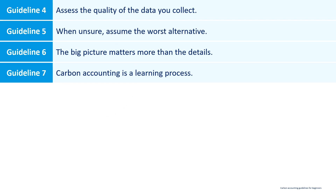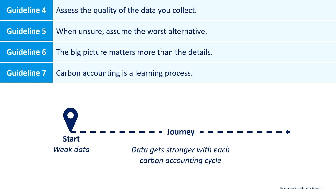The fourth guideline with regards to data quality is: carbon accounting is a learning process. When you just start, the data quality might not be the best, and you might miss some data. But carbon accounting is a learning process — you will learn and improve as you go through different carbon accounting cycles. You will set up more solid data collection and processing processes, and the quality and completeness of your data will improve over time. Don't be too nervous when you start; if things are not perfect, they probably won't be. Focus on continuous improvement.